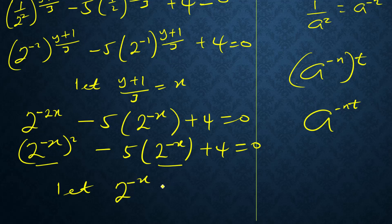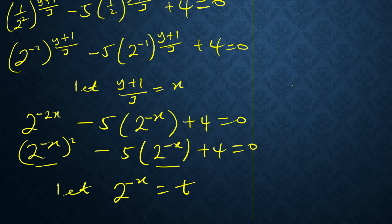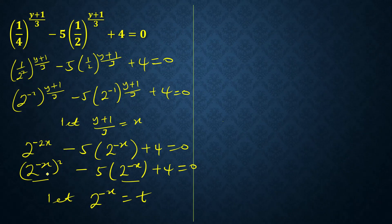We have 2 raised to minus x in common, so let this one be t. So where you see 2 raised to minus x, put t there, so I'll put t here which will be t squared.